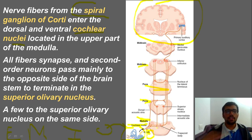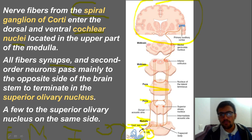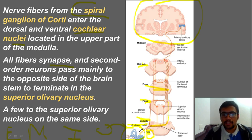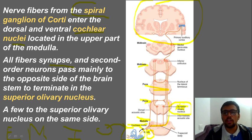The fibers synapse at the cochlear nuclei — this is the first order neuron. The second order neuron then passes, and the majority of fibers cross to the contralateral side in the brainstem, relaying at the superior olivary nucleus. So: cochlear nuclei → superior olivary nucleus.